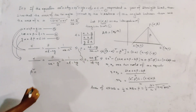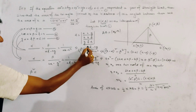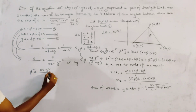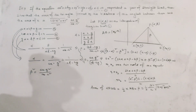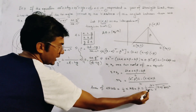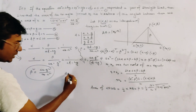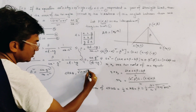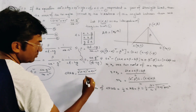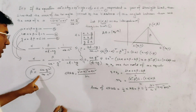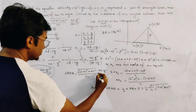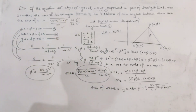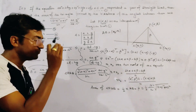Multiplying both expressions for β, the (af − hg) terms cancel, giving β² = (ac − g²)/(ab − h²). Substituting this into the area formula: Area of triangle PAB = √[(a−b)² + 4h²] / (2h) × (ac − g²)/(ab − h²). This is the required result.